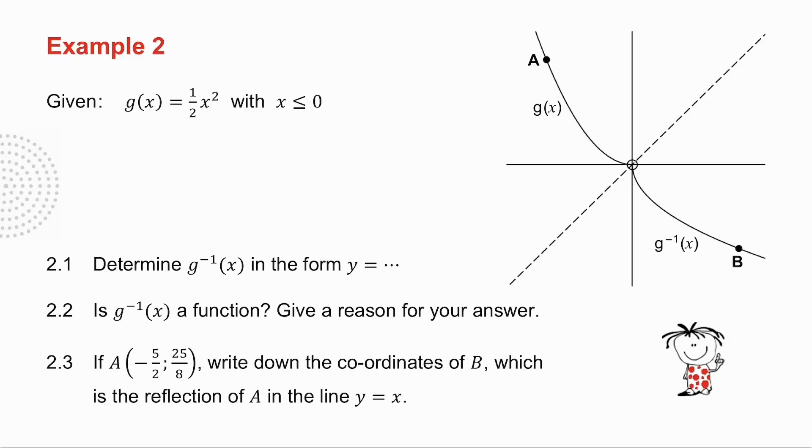In example two, I've given you g of x, which is half a parabola, because I've restricted my domain. So what I want you to do is I want you to pause the video. I want you to try example two, and then we'll do it together.